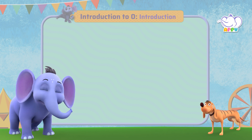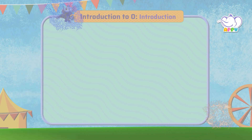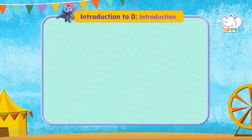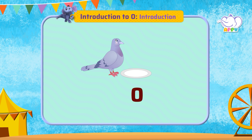Let's begin, shall we? We see a pigeon eating biscuits. What is left after the bird has eaten them? Nothing at all. This is denoted by the number zero. Zero means nothing, so zero biscuits means nothing is left.